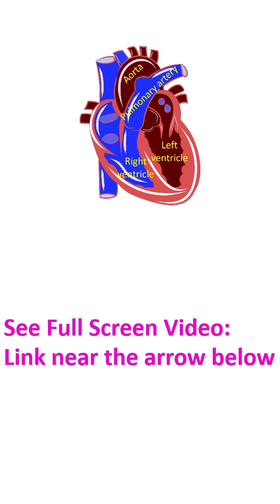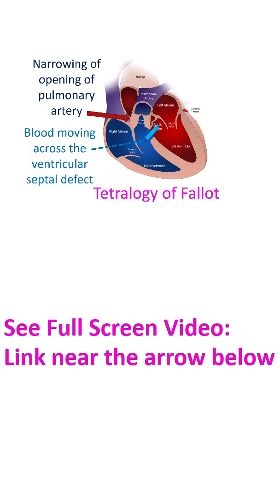The aorta is the large blood vessel which carries oxygenated blood to the whole body from the left ventricle. The left ventricle is the lower left chamber of the heart. In Tetralogy of Fallot and similar birth defects of the heart, blood flow to the lungs is reduced due to narrowing of the opening of the pulmonary artery.